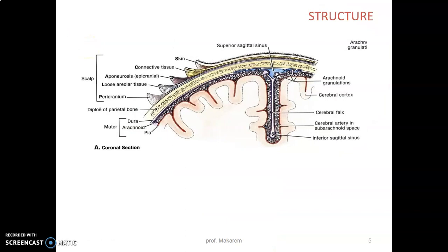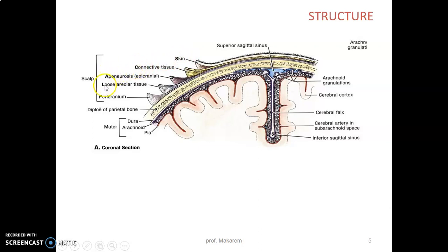The scalp is made up of five layers. From the word SCALP: the most superficial is Skin, followed by Connective tissue, then Aponeurosis, Loose areolar tissue, and the Pericranium. Those are the five layers of the scalp, which sits just above the skull bone.